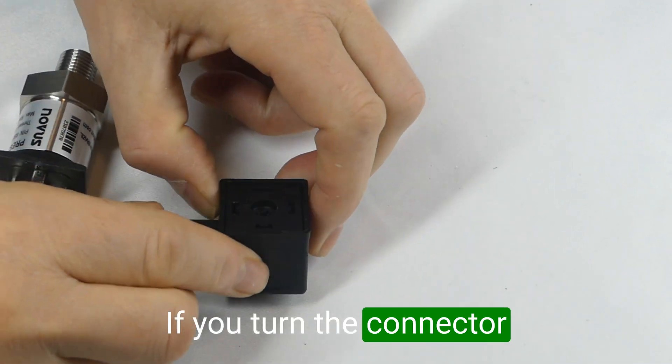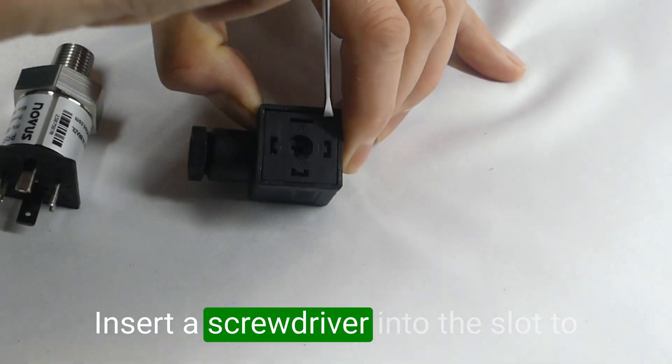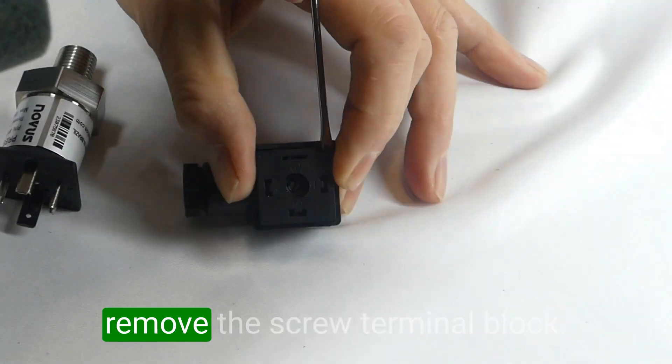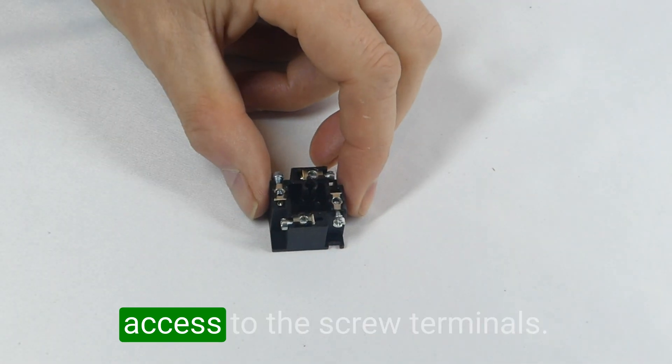If you turn the connector over, you'll see a small slot in the corner of the connector. Insert a screwdriver into the slot to remove the screw terminal block. Once this is done, you'll have access to the screw terminals.